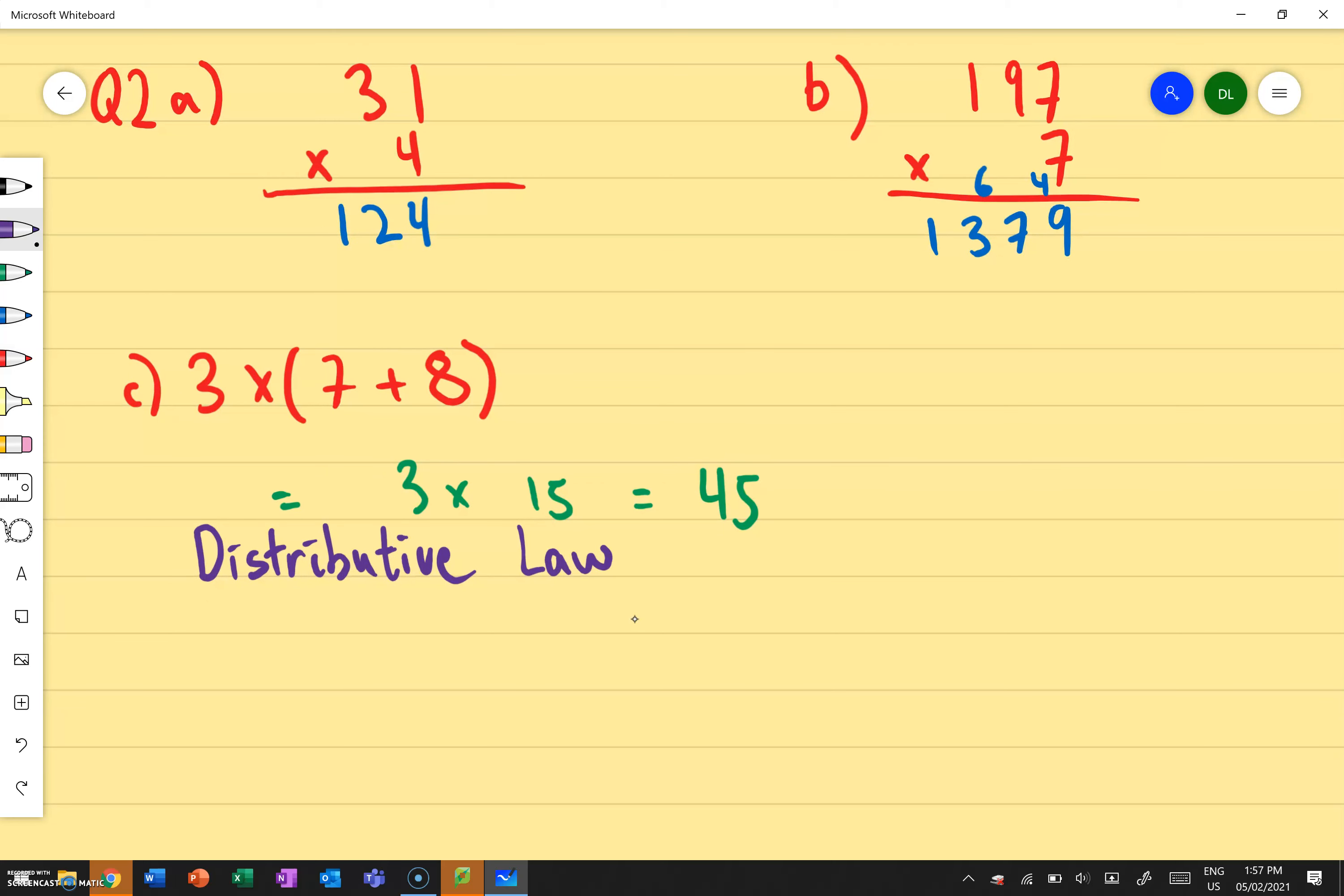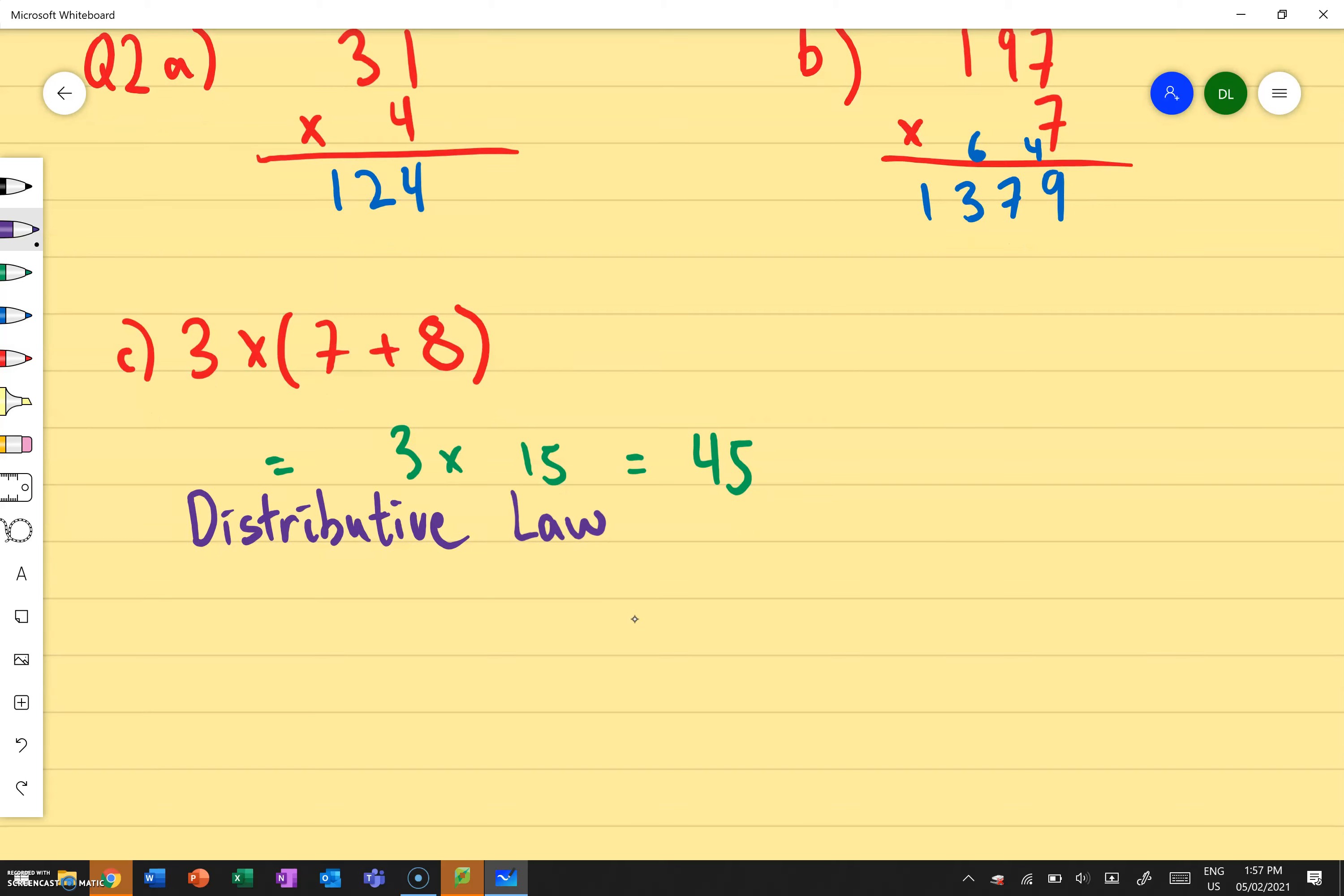So what Taylor's just said is another way we can do it. Instead of running 3 times and then what's in the bracket, what if we multiply everything in the bracket by 3 instead and then add together? So I can say 3 times 7 plus 3 times 8. Do you guys see where I got that from?